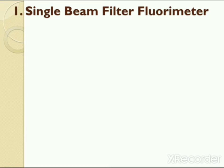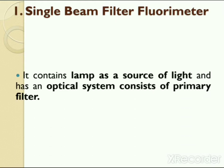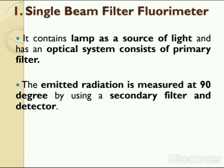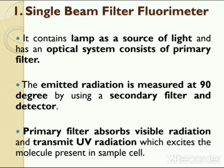The first type of instrument is the single beam filter fluorimeter. As the name suggests, this type of instrument utilizes a single beam of light for fluorimetric analysis. This instrument consists of a tungsten lamp as the light source, and for selecting a specific wavelength it also contains an optical system as a primary filter. Emitted radiation is modulated to a 90 degree angle and then passes through a secondary filter and is analyzed by the detector. The primary filter absorbs visible radiation and transmits ultraviolet radiation, while the secondary filter absorbs ultraviolet radiation and transmits visible radiation produced by the sample.